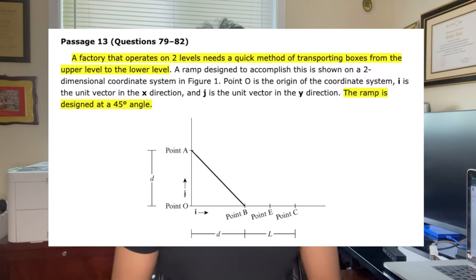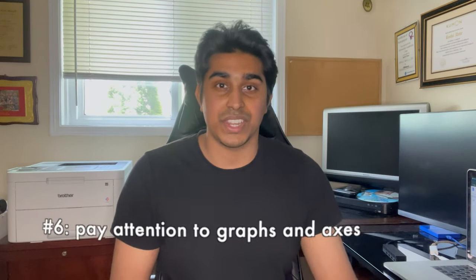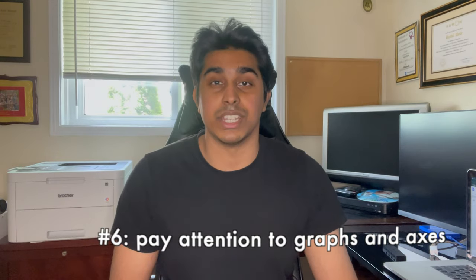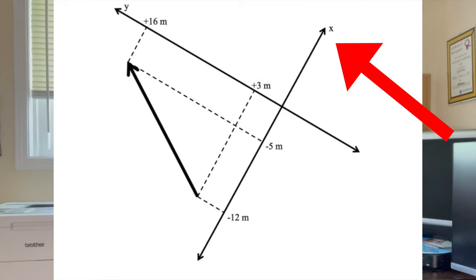On every section of the MCAT, except for CARS, you're going to be encountering questions that involve graphs, and this is the case for many physics questions. That's why it's so important that when you're going over content, you pay attention to those graphs and what the axes mean especially. If you don't understand what the axes mean, this could cost you a lot of marks, because a lot of questions deal with the interpretation of graphs.